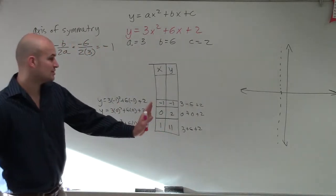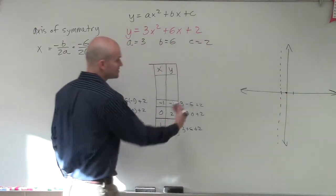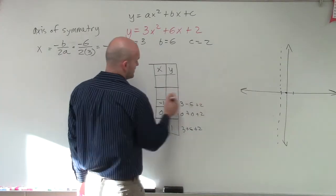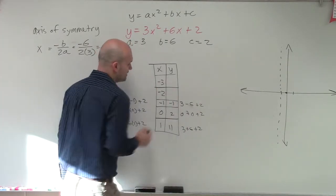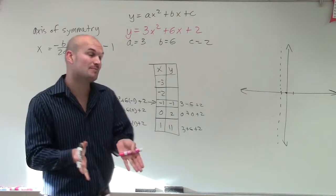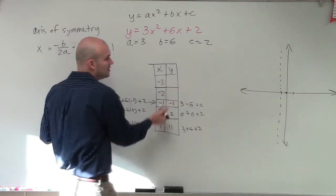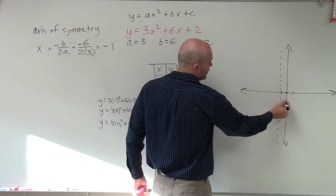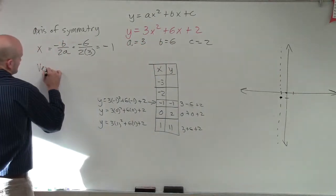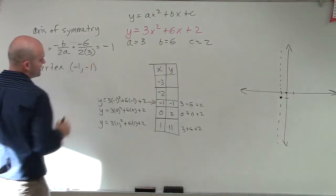So those are my two points to the right: 0 and 1. If I reflect over the axis of symmetry, the two corresponding points to the left would be negative 2 and negative 3. My graph reflects over the axis of symmetry. My vertex is at negative 1, negative 1, so I can write the vertex as the point negative 1 comma negative 1.